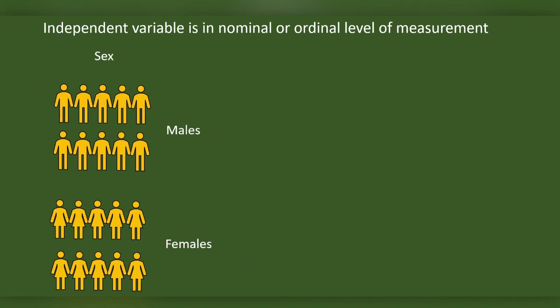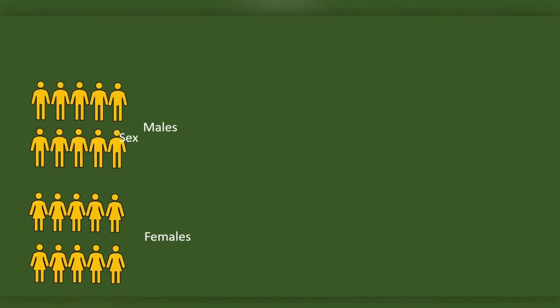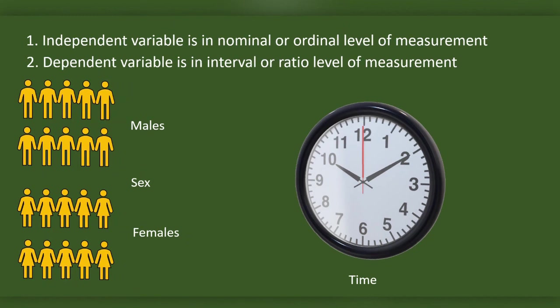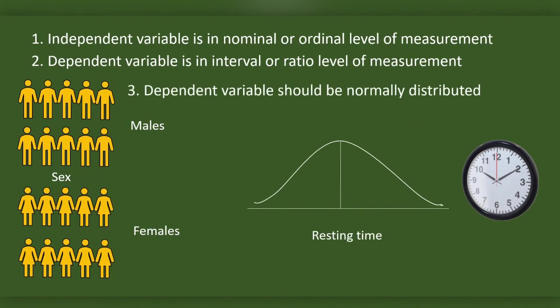The independent variable will be in two categories, here as in sex. We will have only one independent variable but we can have more dependent variables. The dependent variables should be in interval or ratio level of measurement, or they should be continuous variables. One example of a dependent variable can be resting time.